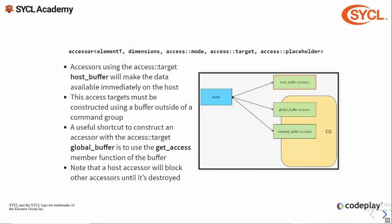Next let's take a look at the access target host buffer. This provides immediate access to the data in the host application, so it must be constructed outside of a command group. A shortcut for constructing a host buffer accessor is also provided by the buffer class. Constructing a host buffer accessor can trigger synchronization and copy the latest modified copy of the data back to the host application. Note that a host buffer accessor will block any other accessor from accessing the data until it's destroyed.